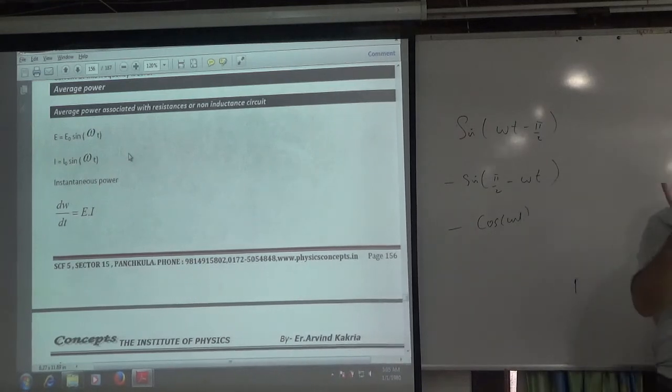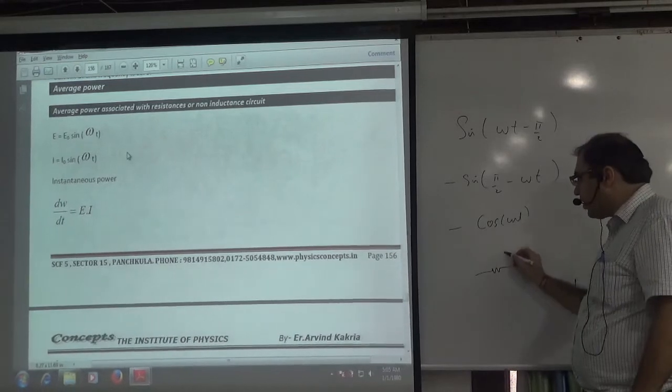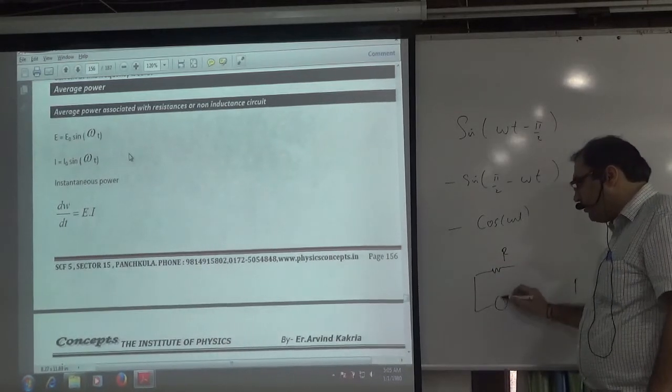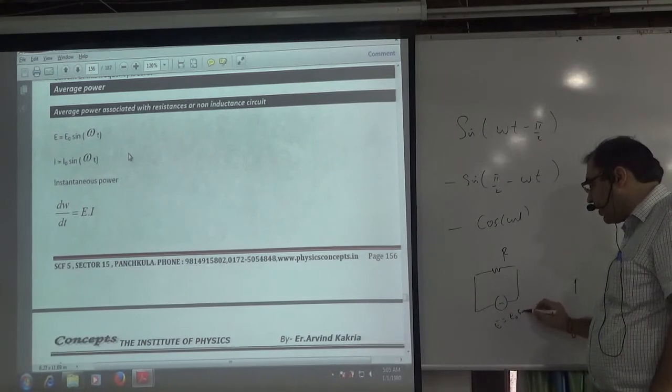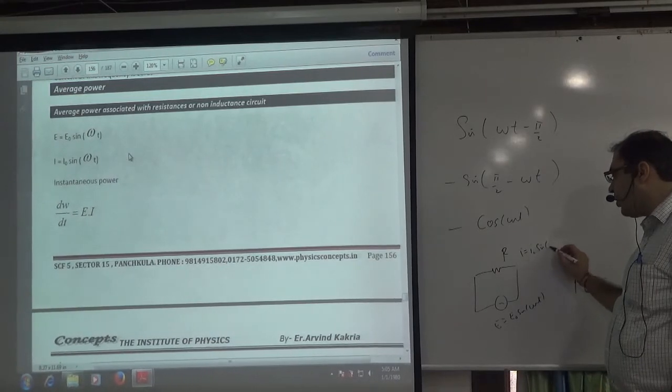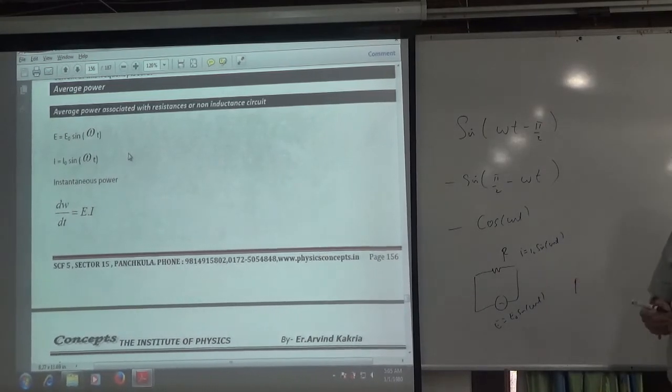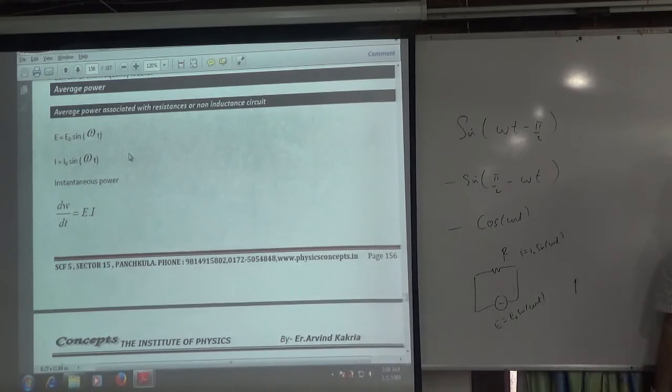What do I need to do for average power? First of all, I will take a resistor on this topic. I will take AC supply. E is equal to E0 into sin of omega t. I know what will be the resistor current? I0 sin of omega t. Because phase difference, voltage and current are zero in case of the resistor.